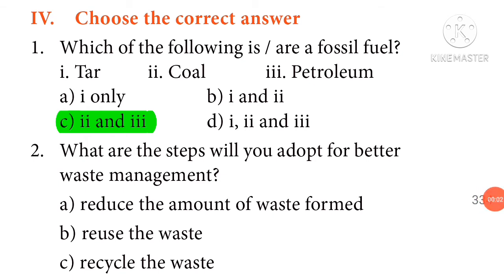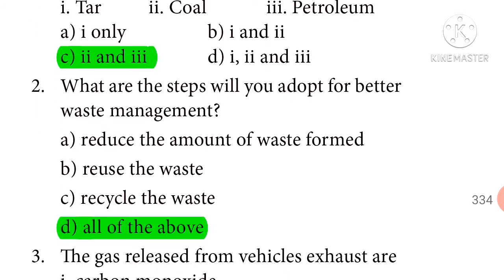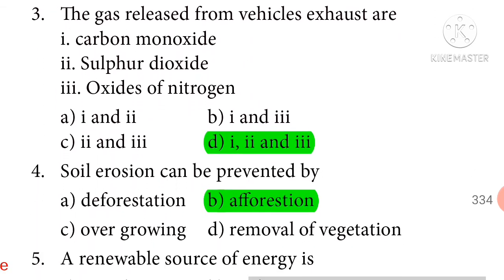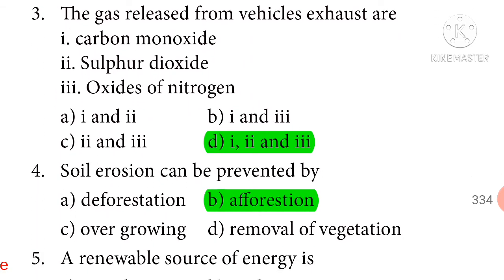Choose the correct answer. Which of the following is a fossil fuel? Options: Tar, Coal, Petroleum. Correct answer: Option C — Coal and petroleum. What steps will you adopt for better waste management? Reduce the amount of waste formed, Reuse the waste, Recycle the waste. Correct answer: Option D — All of the above. The gases released from vehicle exhaust are carbon monoxide, sulfur dioxide, and oxides of nitrogen. Correct answer: Option D — All three.